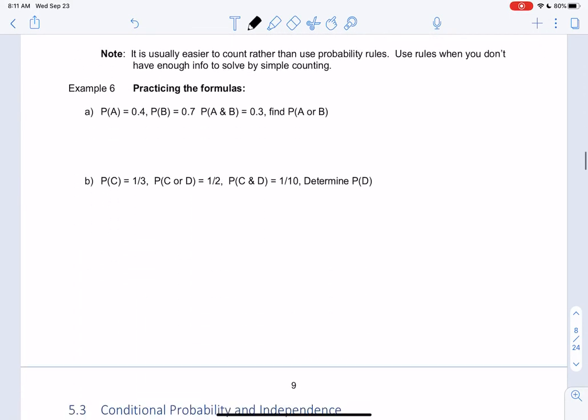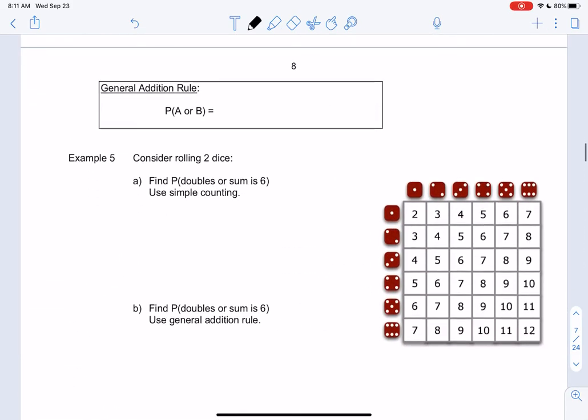All right, let's finish up page 5. And that's it for this section. So in general, the or case is a little more complicated. We just learned we can do P of A plus P of B, but that's only for mutually exclusive. In general, we have to take away the overlap. The reason we have to take it away is because it gets double counted.